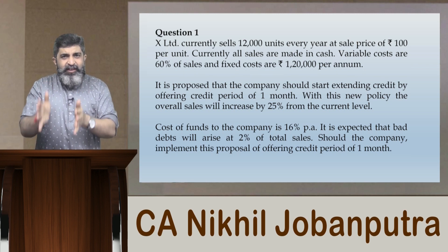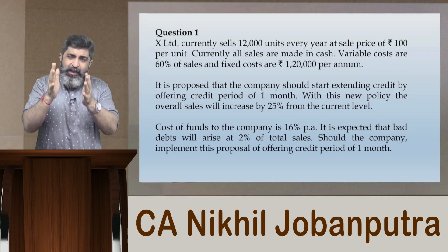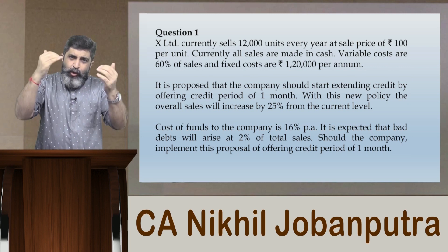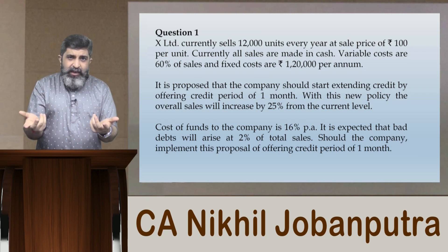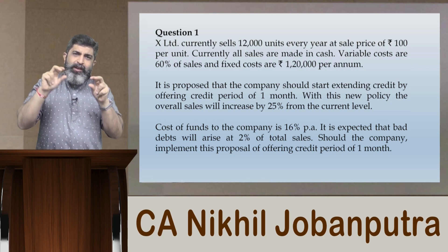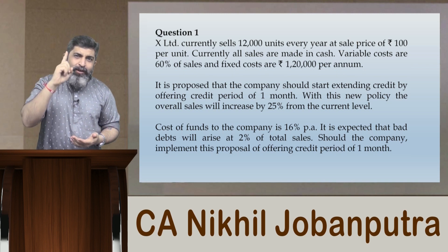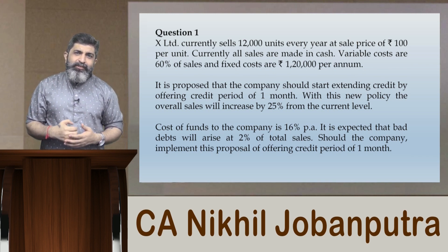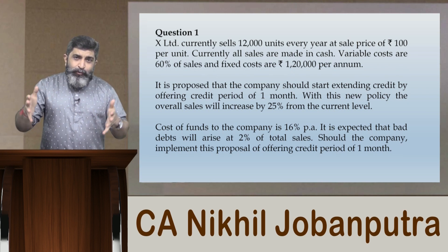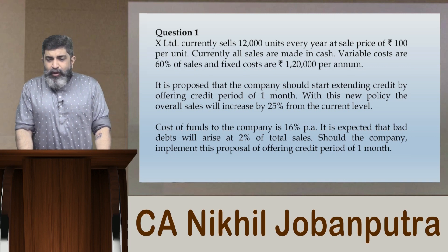For any extension of credit, compare present policy against proposed policy. Work out sales, variable cost, fixed cost, total cost of goods sold, collection charges, cost of funds blocked, and bad debts — then find the net benefit. If the proposed policy gives more profit, go with it. One question is enough for any student to grasp the concept and handle remaining parts of the chapter independently.